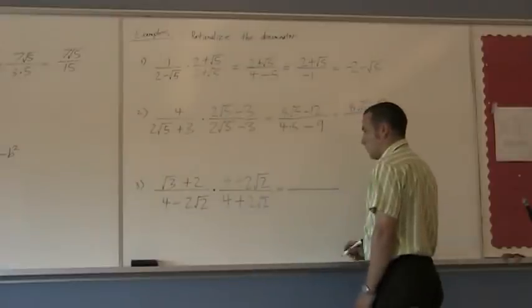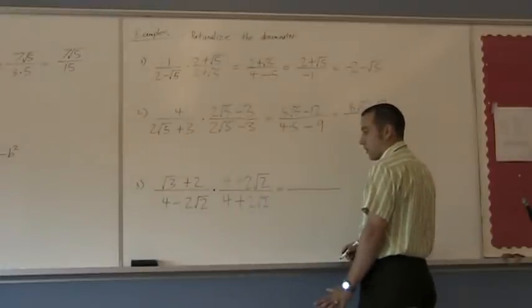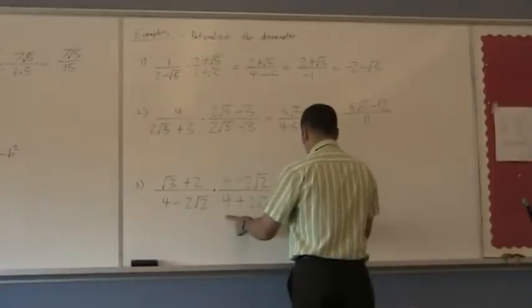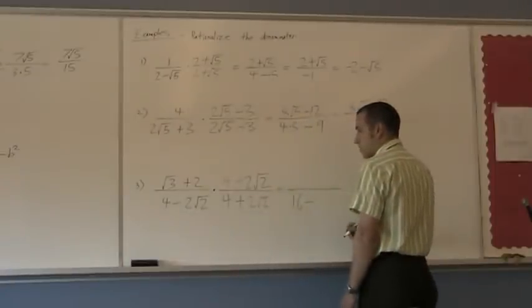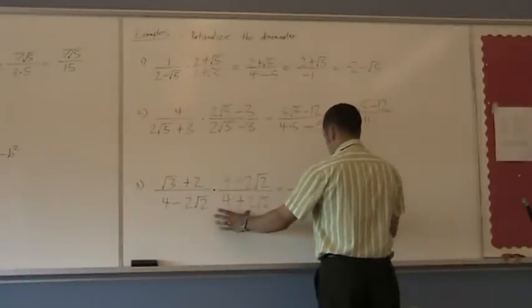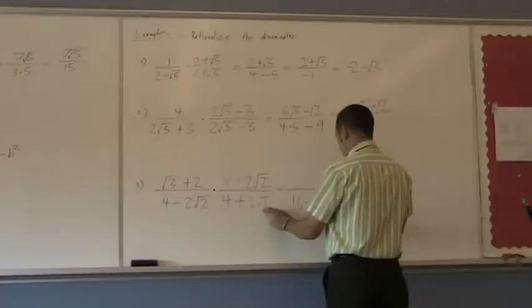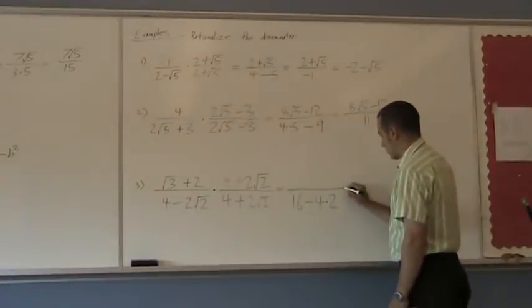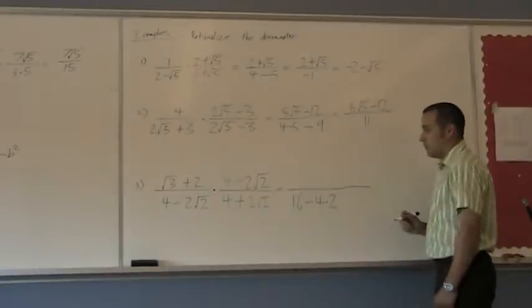Multiply this out. And on the bottom, a squared, 4 and 4, 16. Subtract b squared. Well, 2 squared is going to give me 4. Square root of 2 times square root of 2 gives me 2.